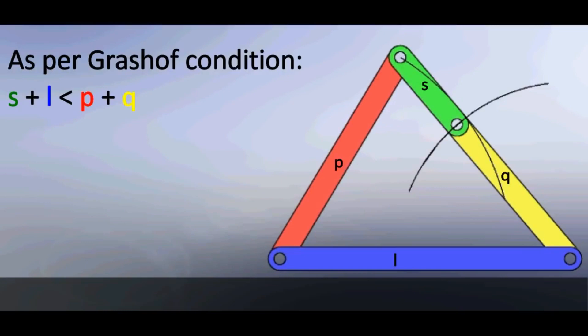As per Grashof condition in a four bar mechanism, for at least one link to make a complete revolution with respect to the ground link, sum of lengths of shortest link and largest link must be less than or equal to the sum of the lengths of other two links.